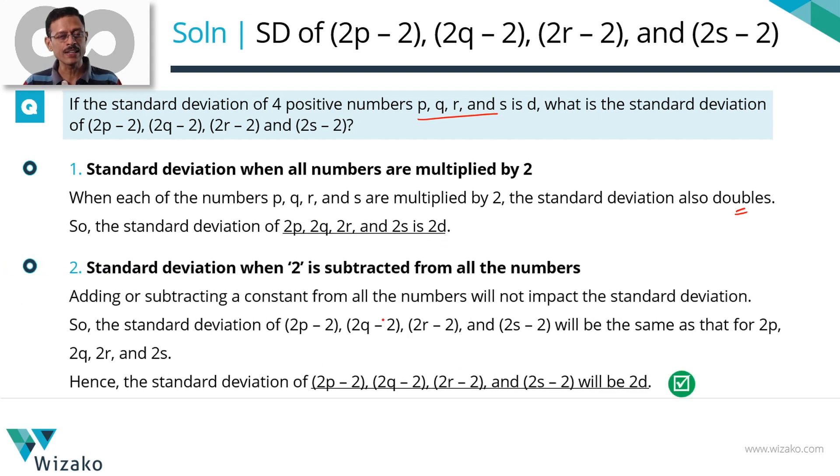If you add or subtract a K to each element in a set, there will be no impact on the standard deviation. The standard deviation for 2P, 2Q, 2R and 2S is 2D. Standard deviation for 2P-2, 2Q-2, 2R-2 and 2S-2 will be the same as that, which is also going to be equal to 2D.